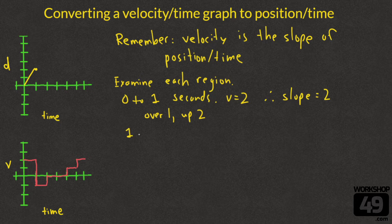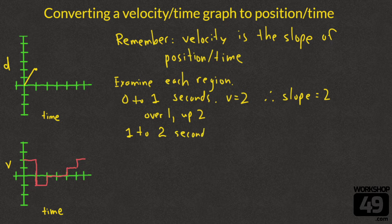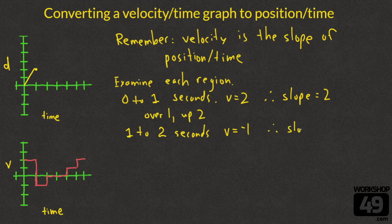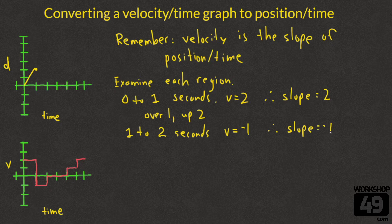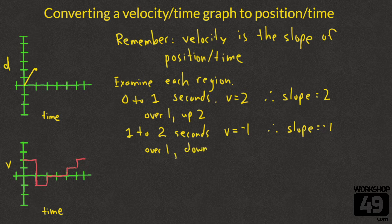One down, five little regions to go. From 1 to 2 seconds, we can see that the velocity equals negative 1. That means the slope of our position time graph in this region must have a slope of negative 1, which means we're going to go over 1 down 1. Hooray! Second region complete.